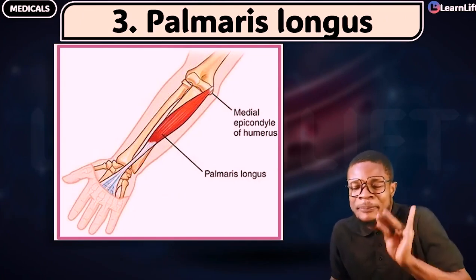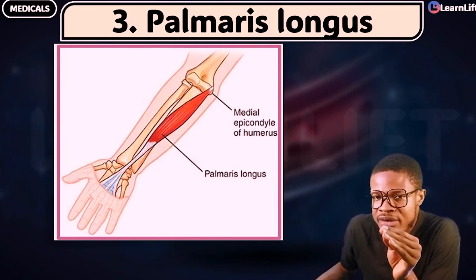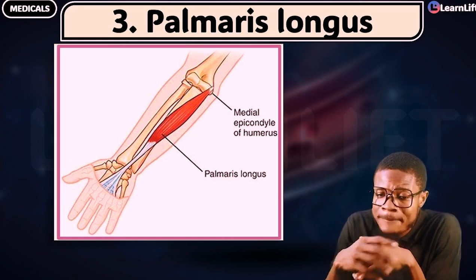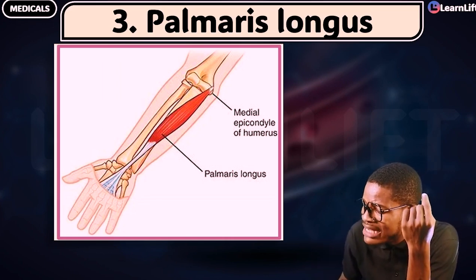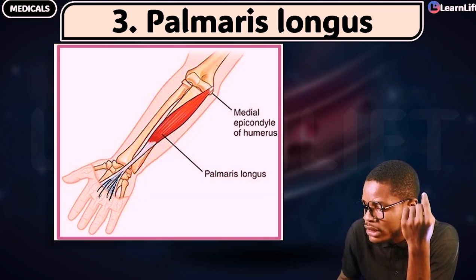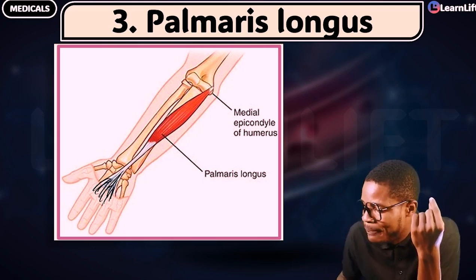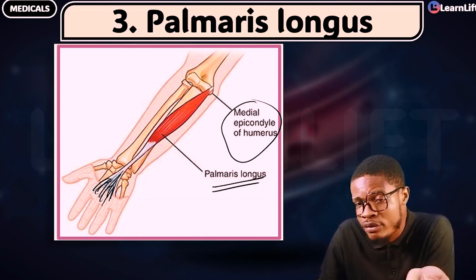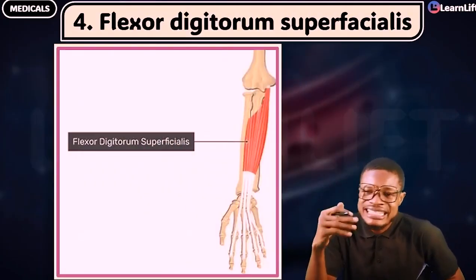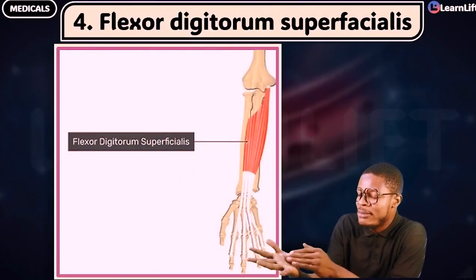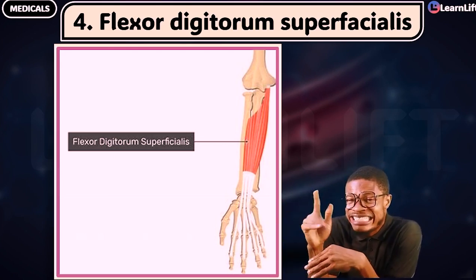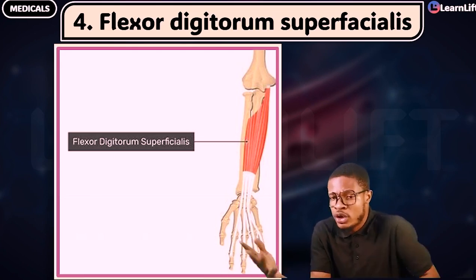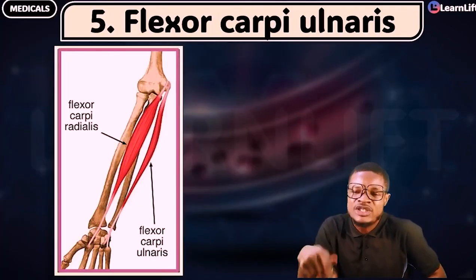The next is called the Palmaris Longus. Why do we call it 'palmaris'? Because it inserts into the palm of the hand. 'Longus' means it is long. Palmaris Longus is a long muscle — the muscle runs down and the tendon continues into the palm of the hand. It originates from the medial epicondyle of the humerus. After the Palmaris Longus, the next is called the Flexor Digitorum Superficialis — 'flexor' means it flexes, 'digitorum' means the digits, and 'superficialis' means it is a superficial muscle.